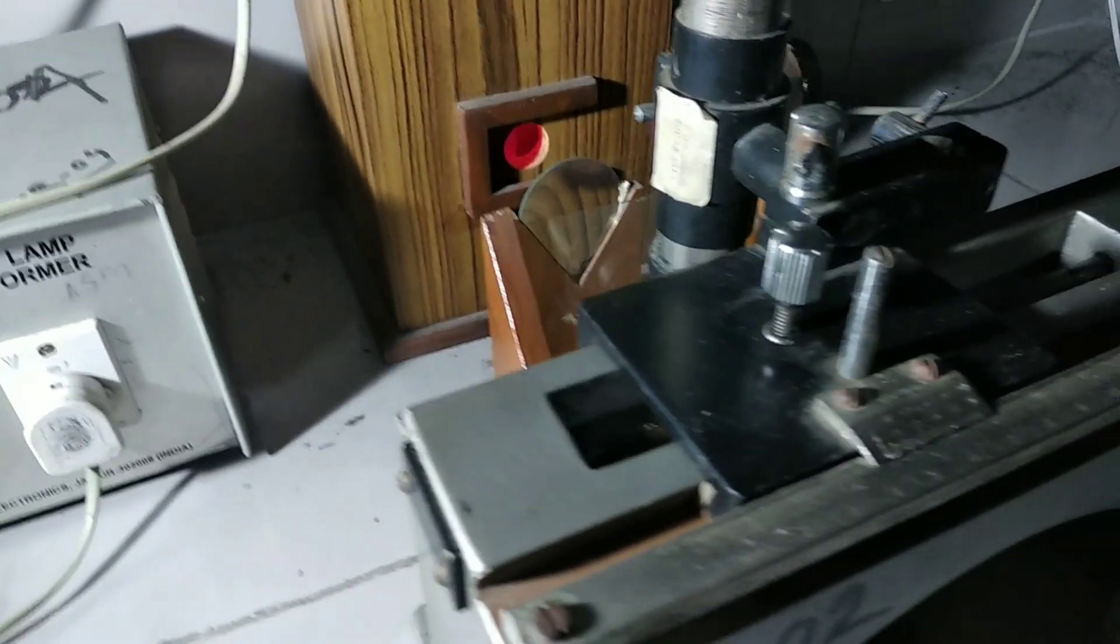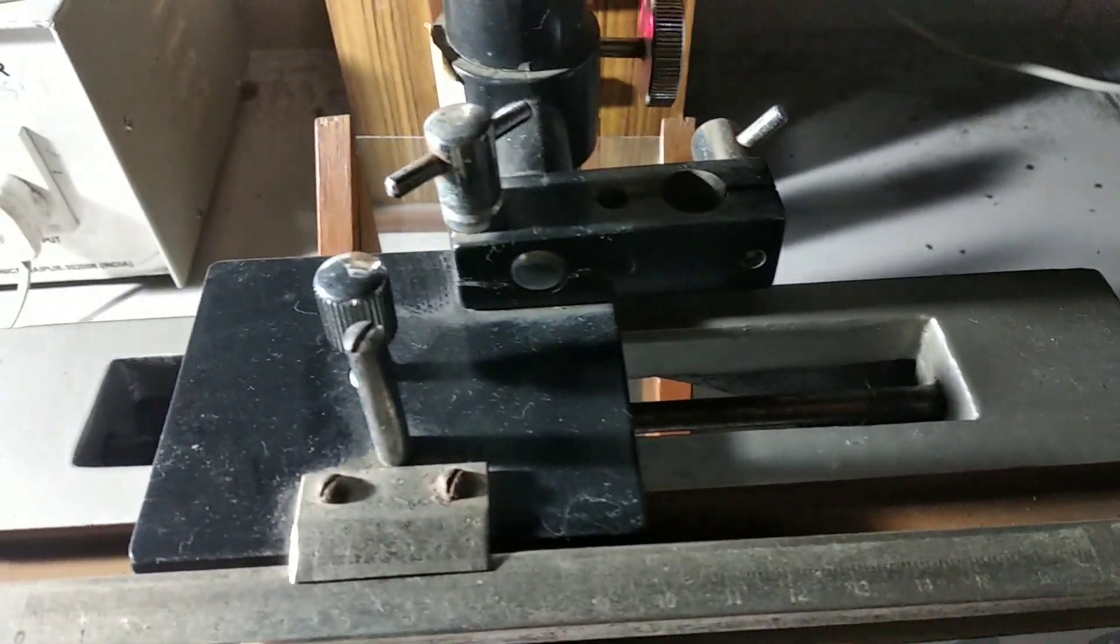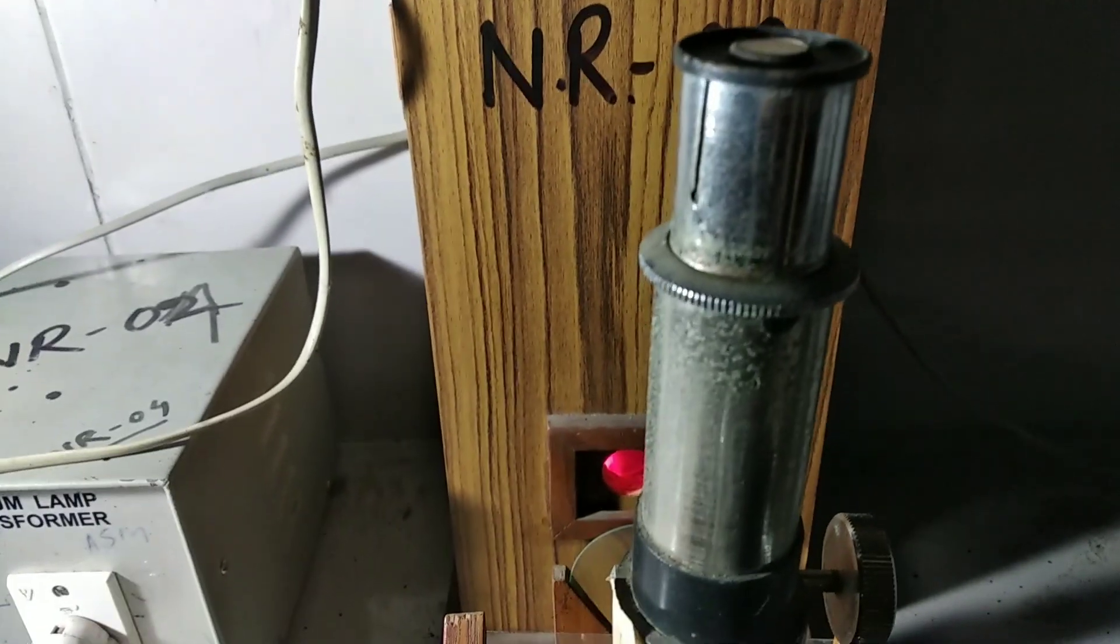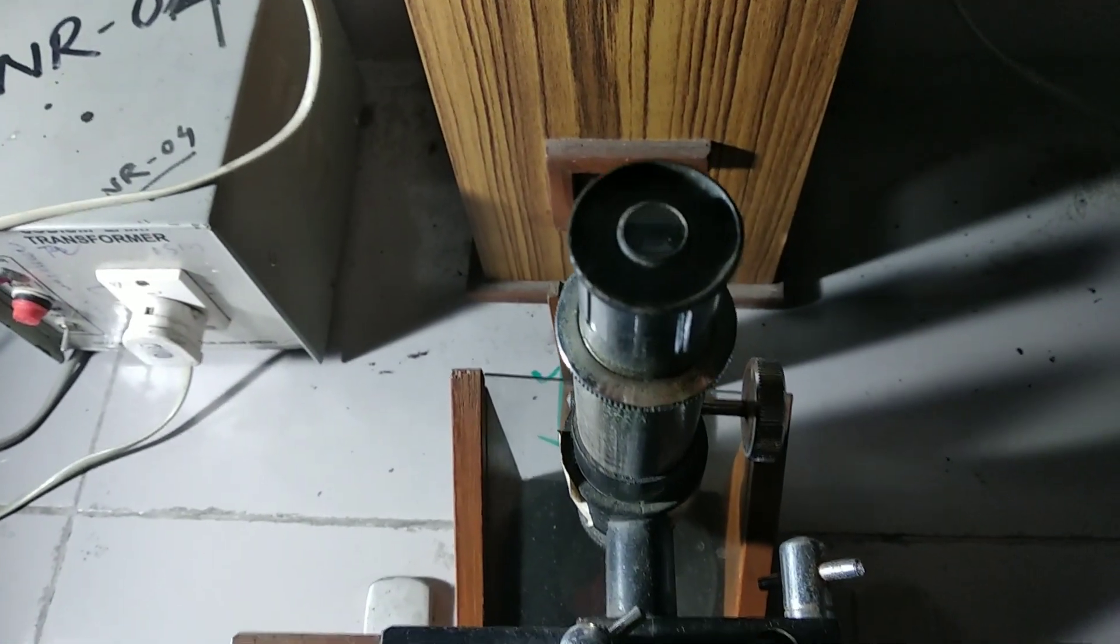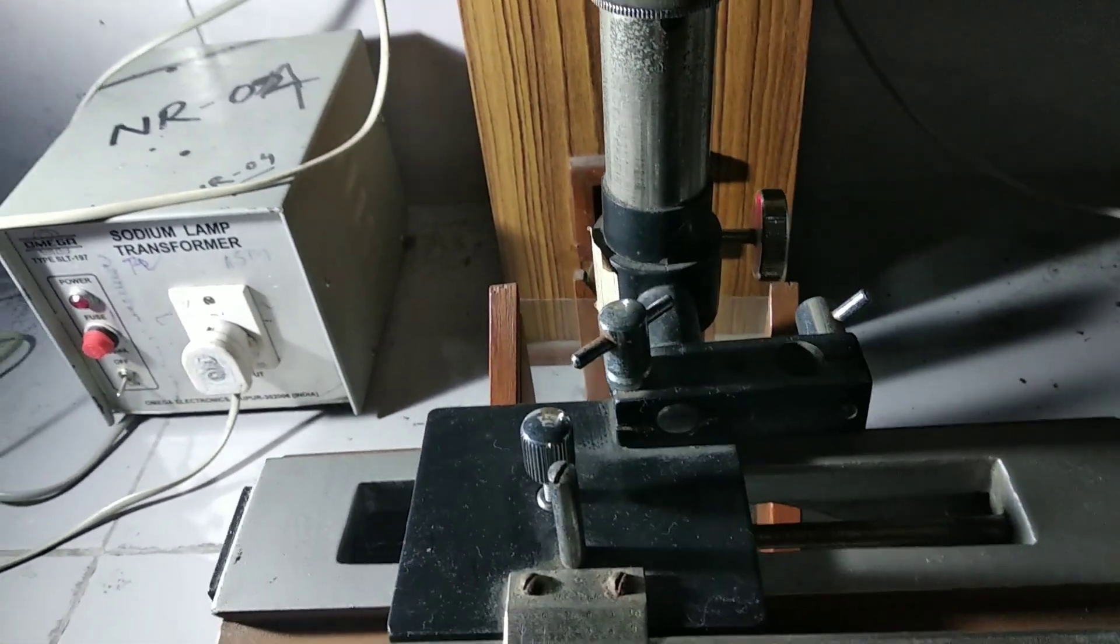But before that, to check the reading from this horizontal scale of traveling microscope. This one is the eyepiece. Through eyepiece, we are going to watch the rings or fringes.